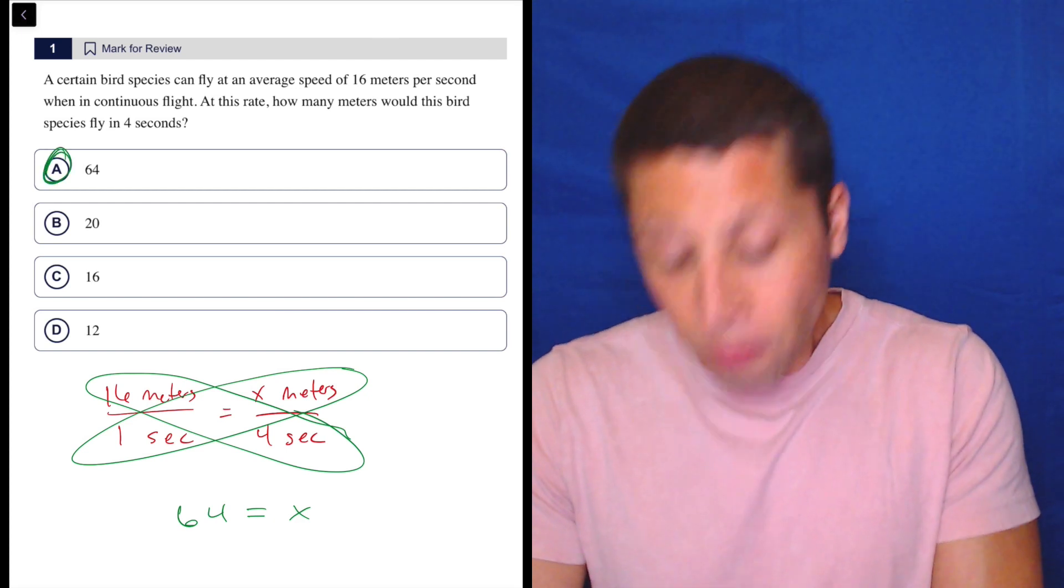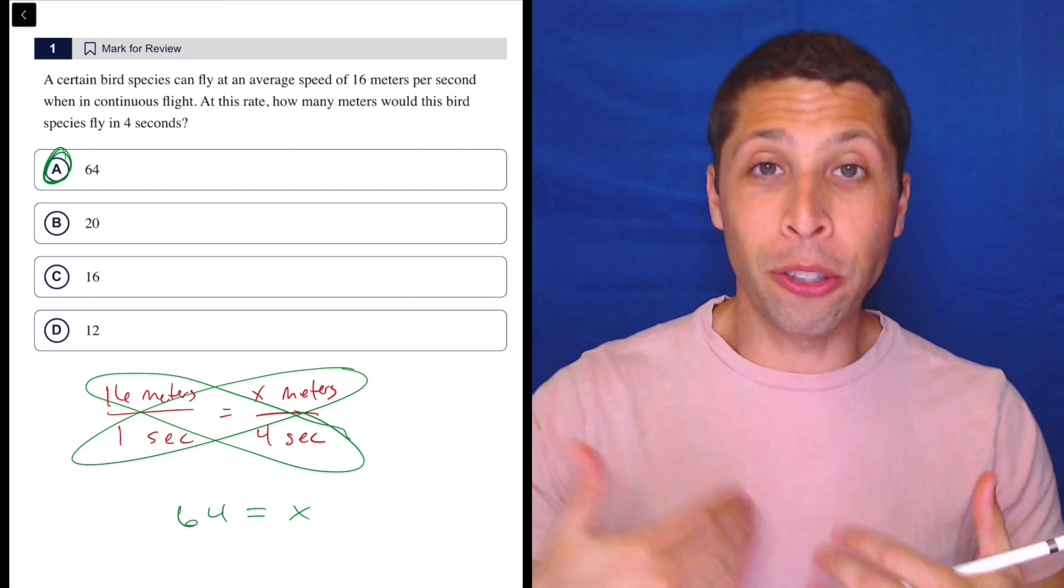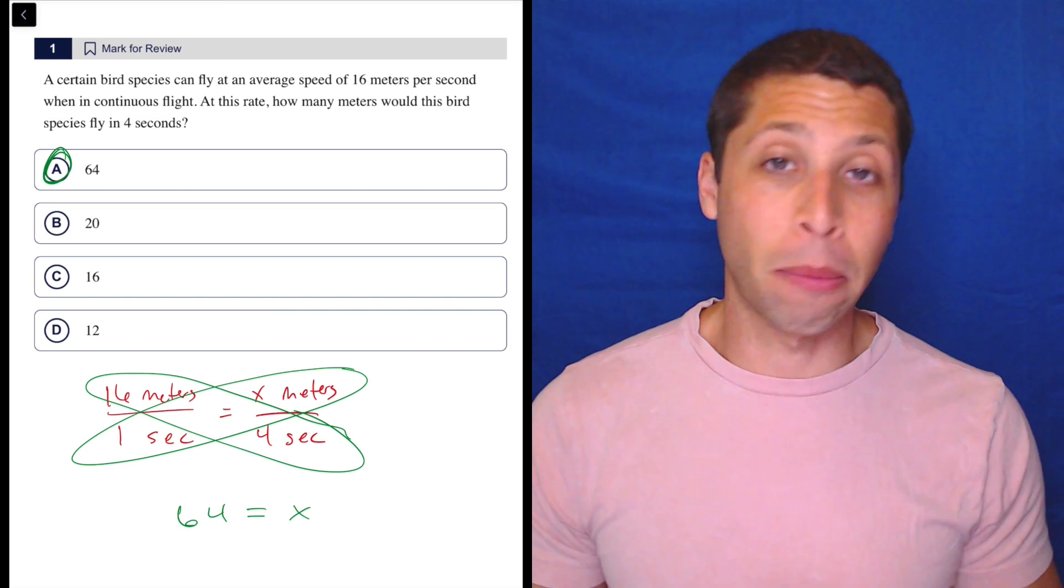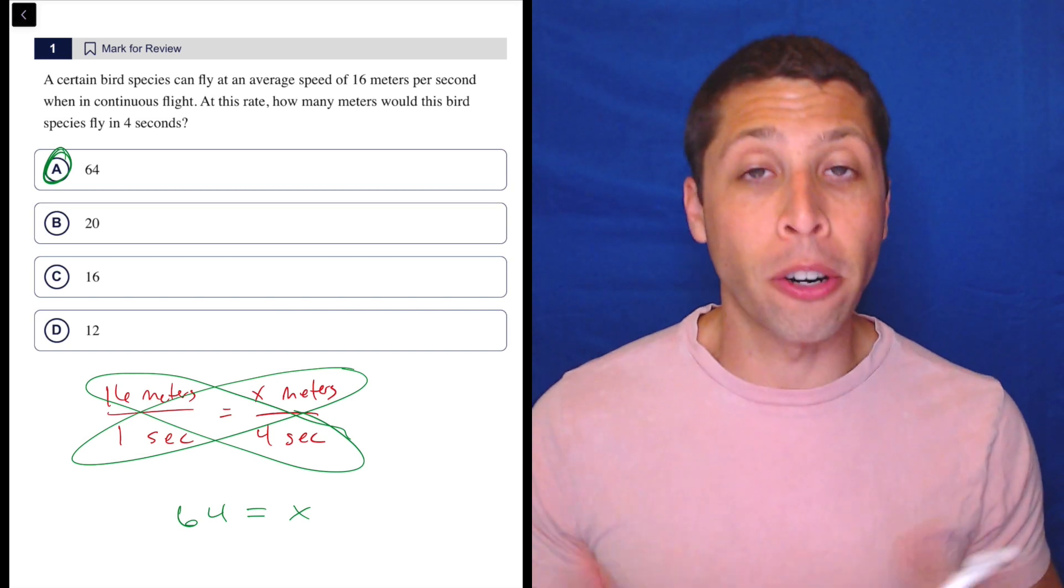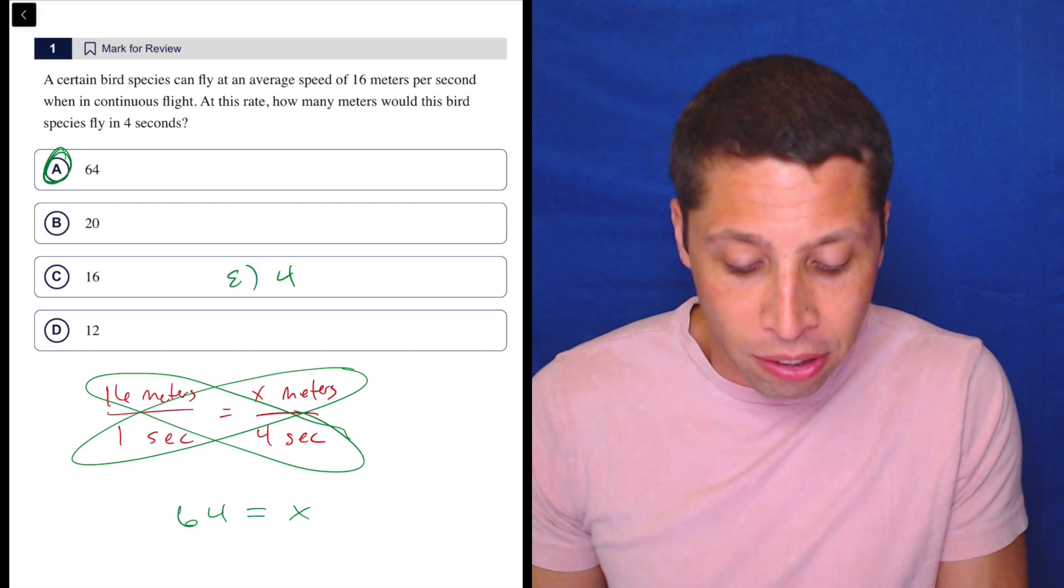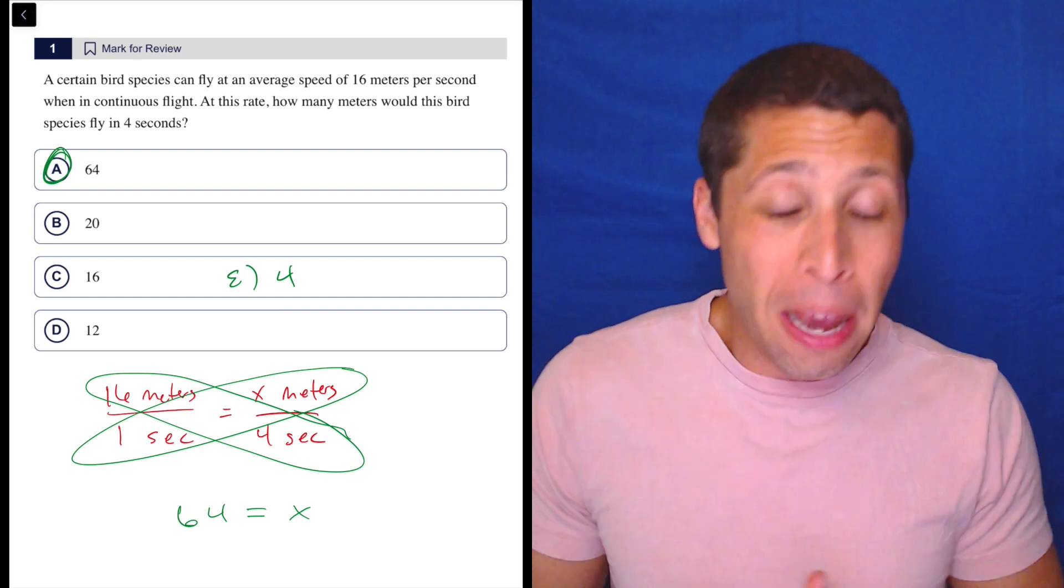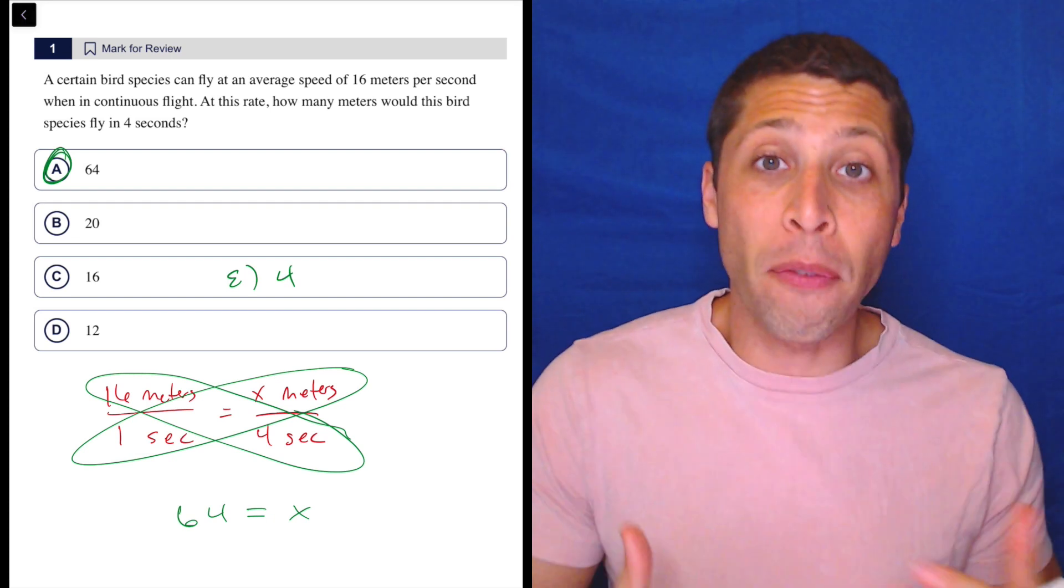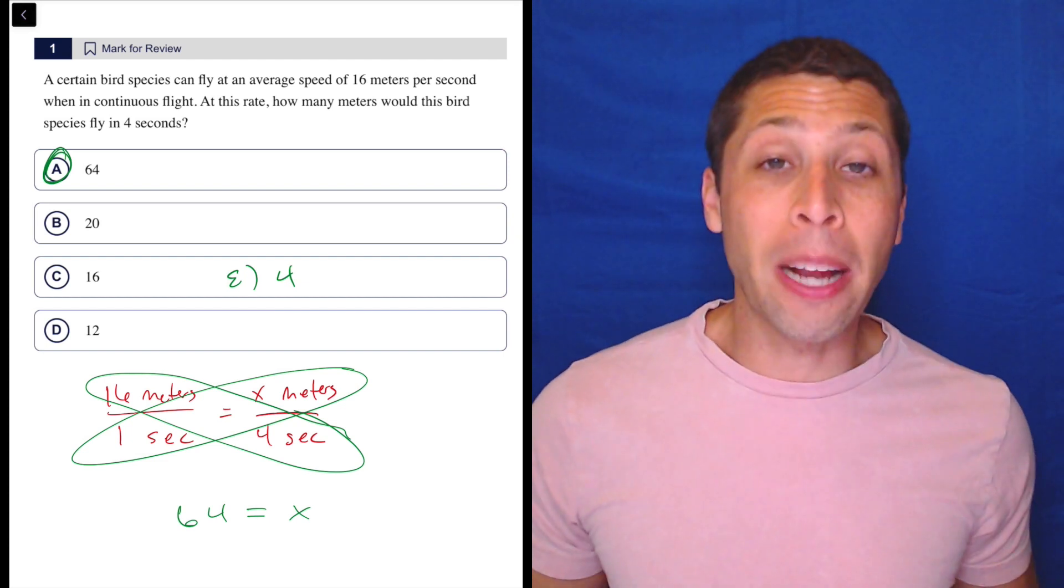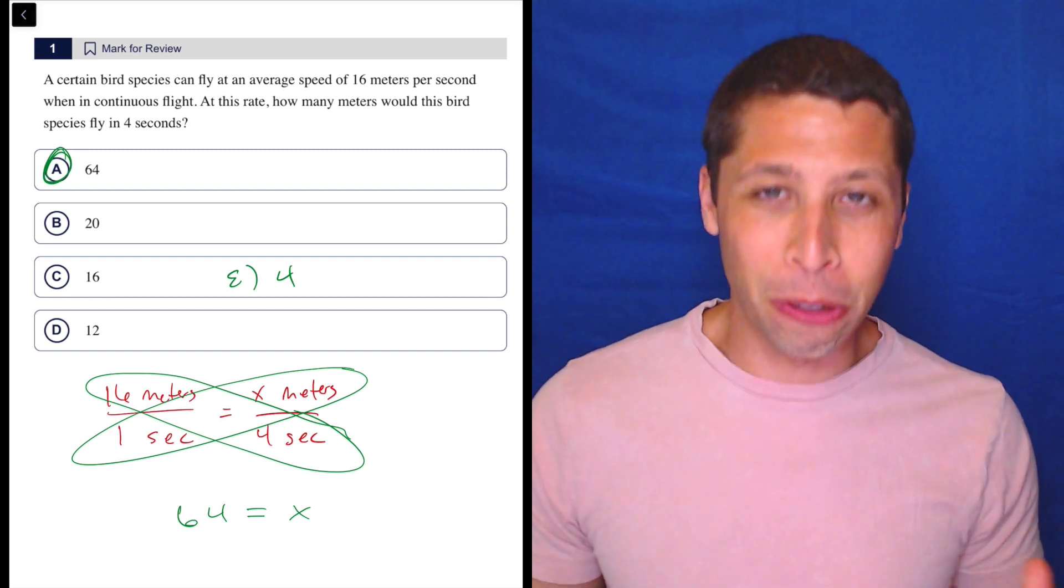Hopefully no real issues here. Nobody's watching this video because they got it wrong, but they are going to make these unit conversion questions harder. I do recommend having some sort of system in place so that when they do get harder, you don't make a mistake. They easily could have put choice E as four. In certain cases, some of you are going to divide when you're supposed to be multiplying. Setting up the proportion like this keeps it safe and secure, so you don't lose those points.